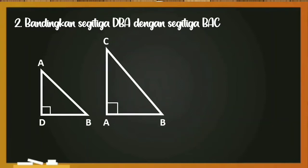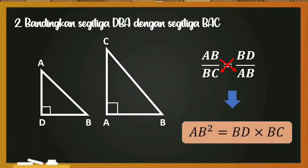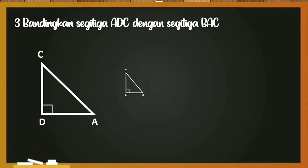Yang kedua, kita bandingkan segitiga DBA dengan segitiga BAC. Dan perbandingan sisi-sisi yang bersesuaian, AB per BC sama dengan BD per BA. Setelah kita kali silang, maka didapatkan rumus AB kuadrat sama dengan BD dikali BC.